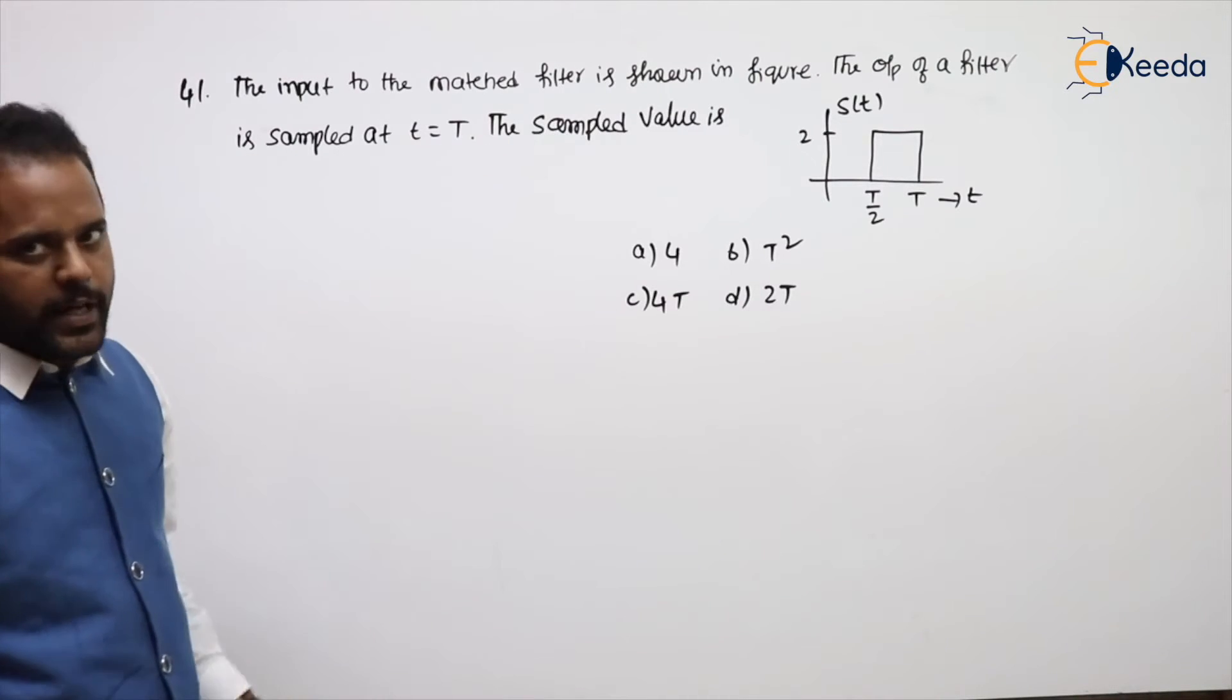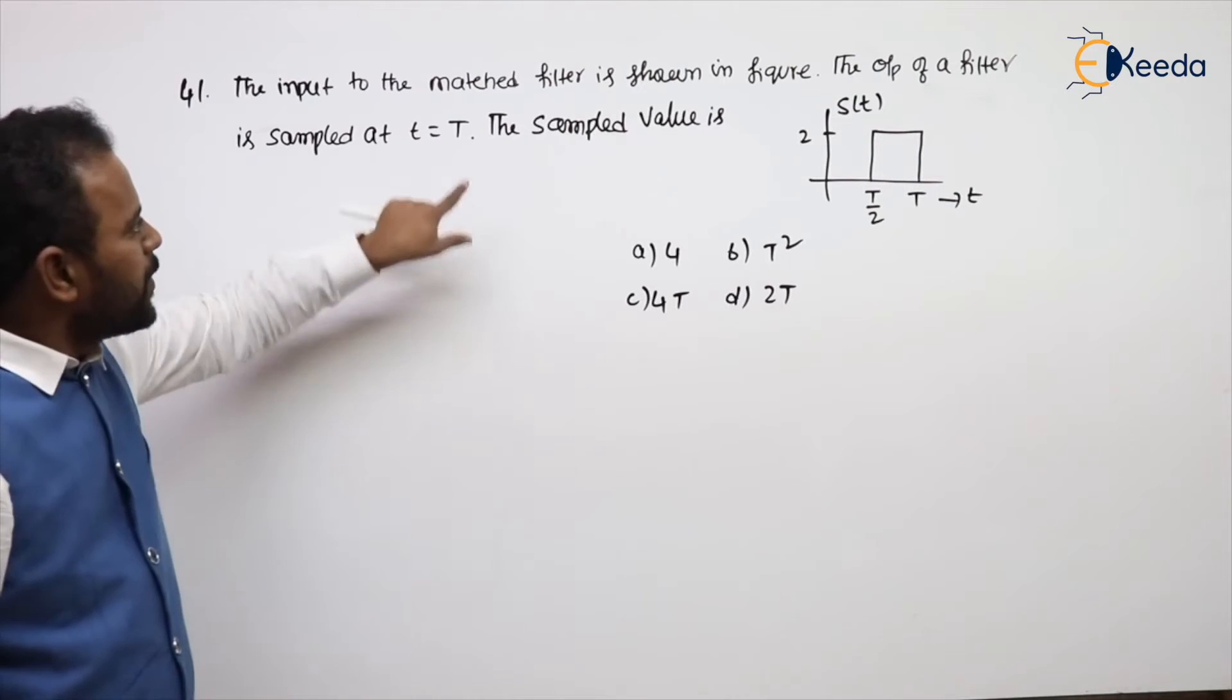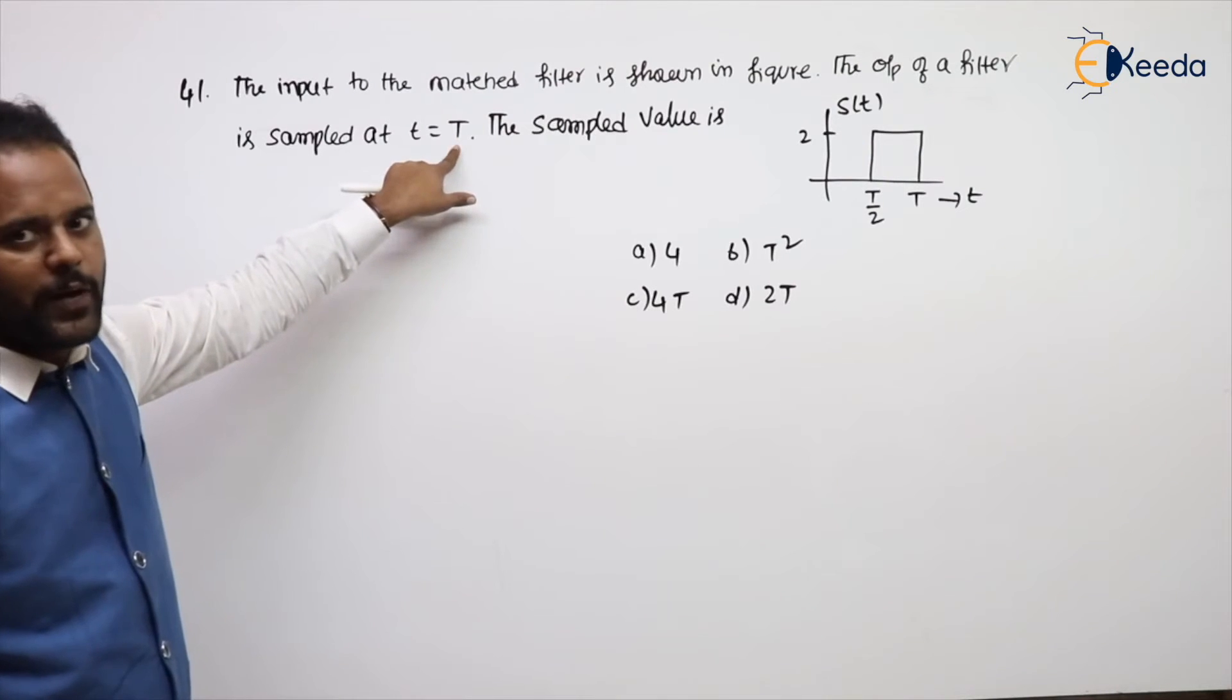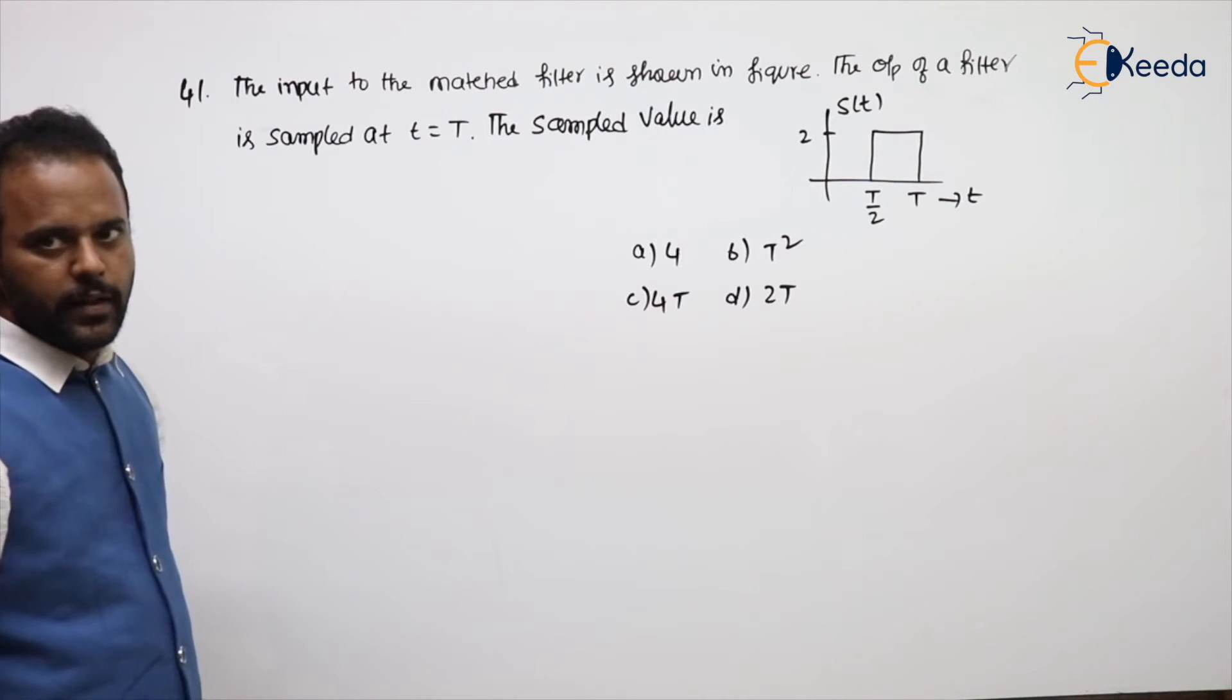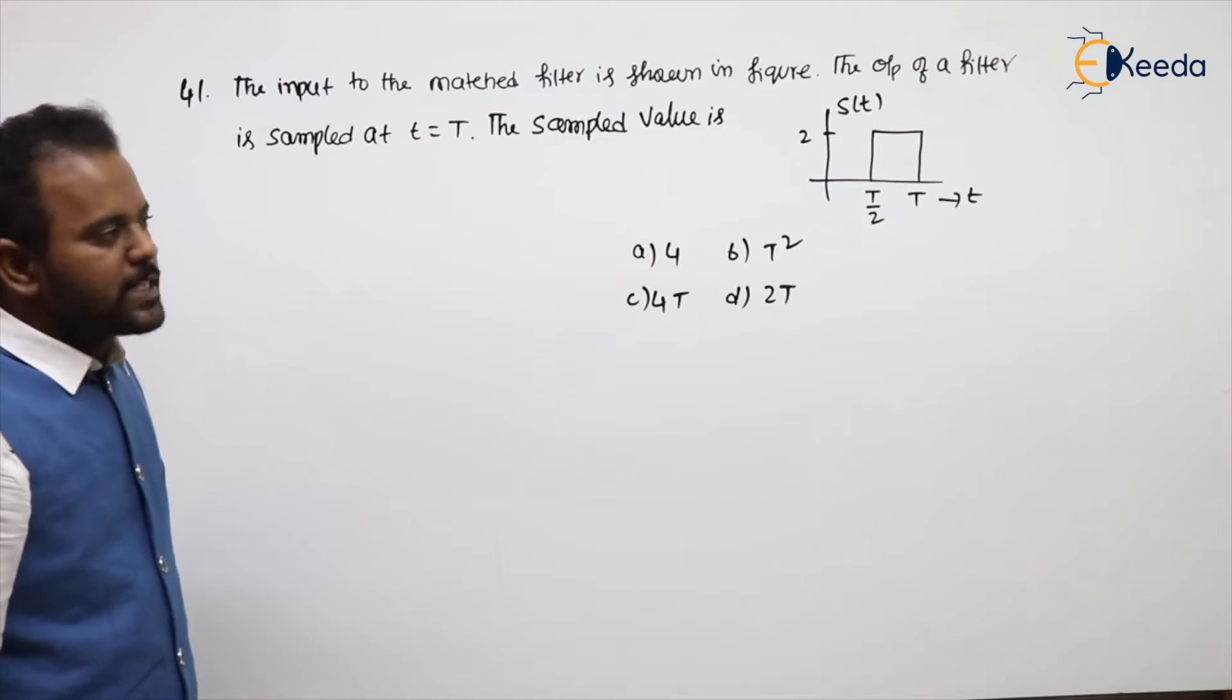The sampled value is, we already know, where you will get the maximum value at the duration of the input itself. We will get the maximum value.